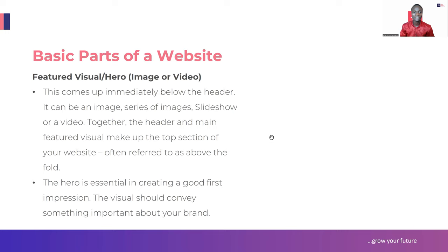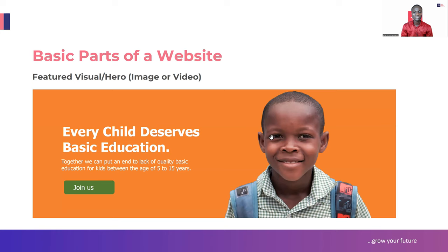The next thing you have is your featured visual, commonly called your hero. It can be an image or a video, and this comes immediately below the header. This is an example of what we call a featured visual or your hero - you can see 'every child deserves basic education,' that's just the H1, the heading. Then you have the call to action button and an image by the side. That big banner, image, video, or slideshow that people see when they access your website is your featured visual or hero.